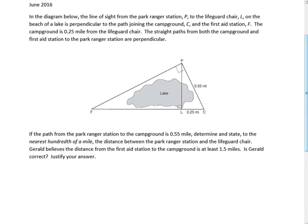In this question — this was June 2016, a short answer question — we've got a diagram with a perpendicular, so we have a right triangle and we have the altitude. We want to recognize that this is a hills and sass situation. If the path from the park is 0.55 miles, determine to the nearest hundredth of a mile the distance between the park ranger station and the lifeguard chair. The park ranger station is P and the lifeguard chair is A, and this is our altitude.